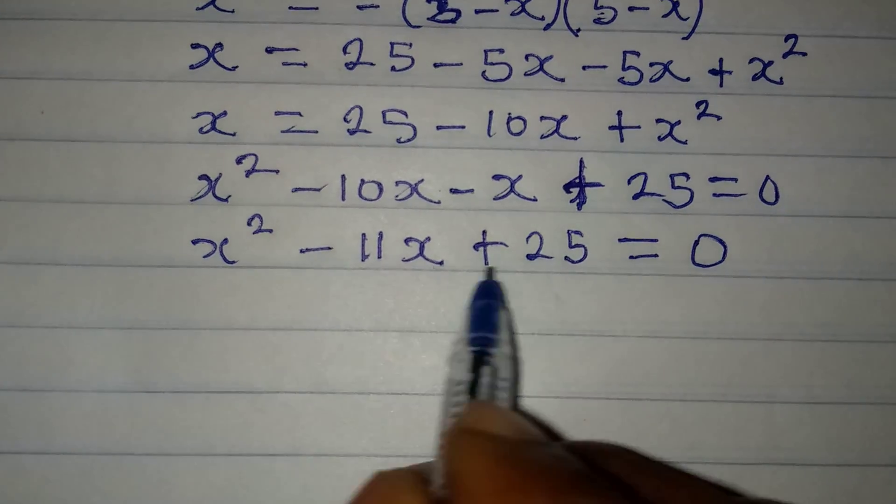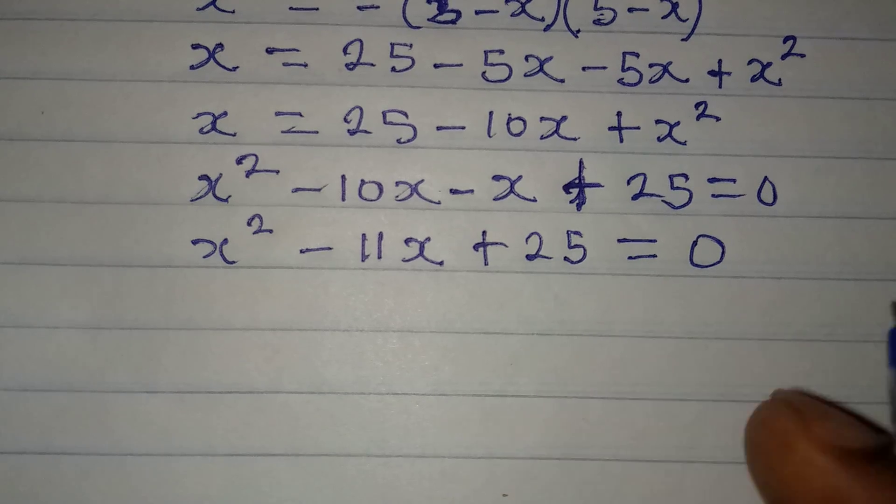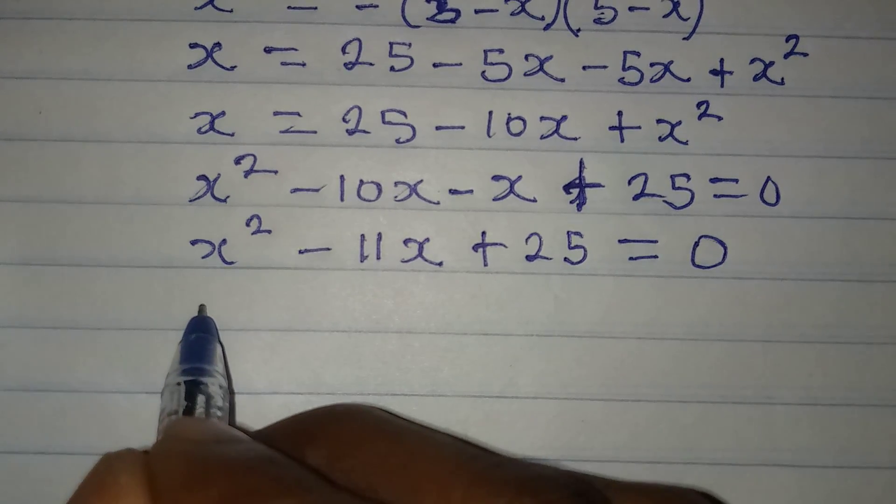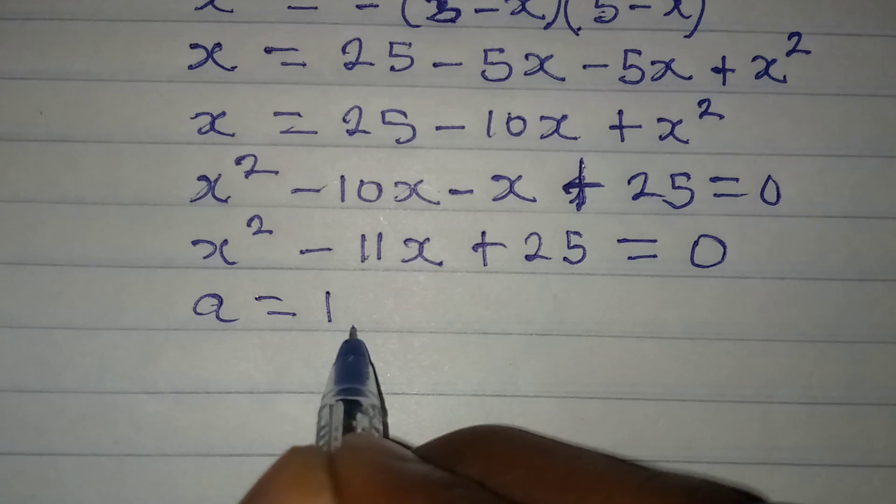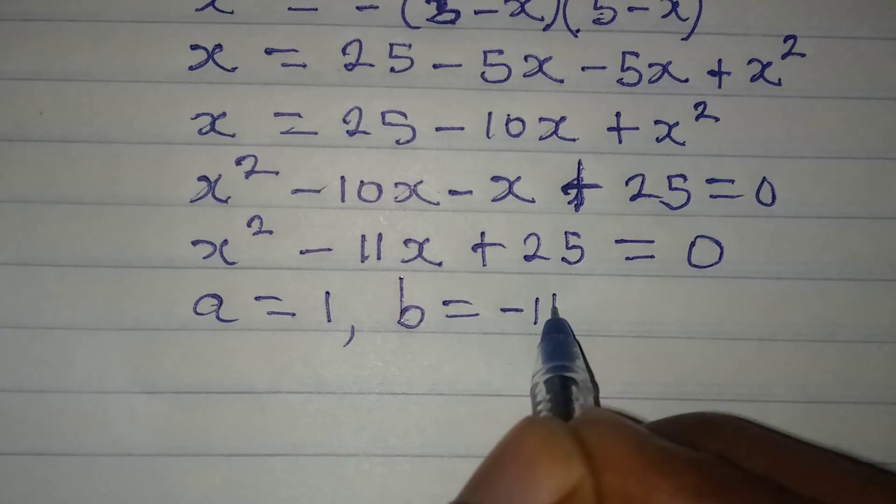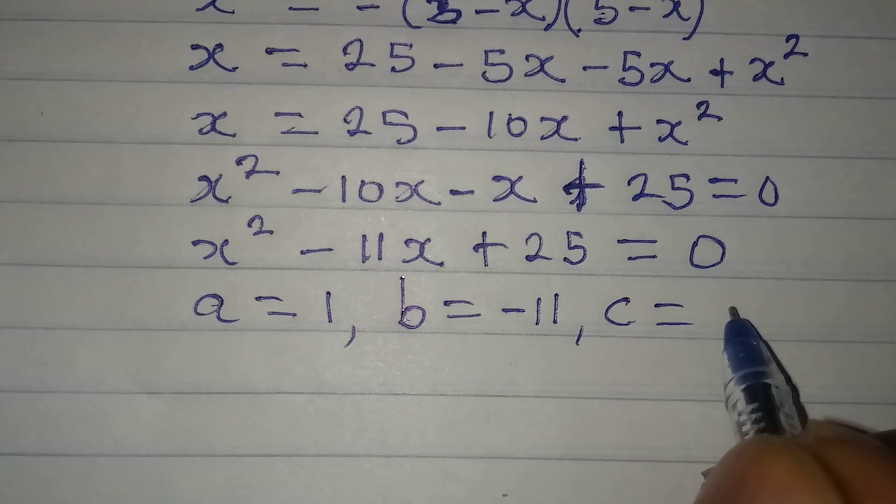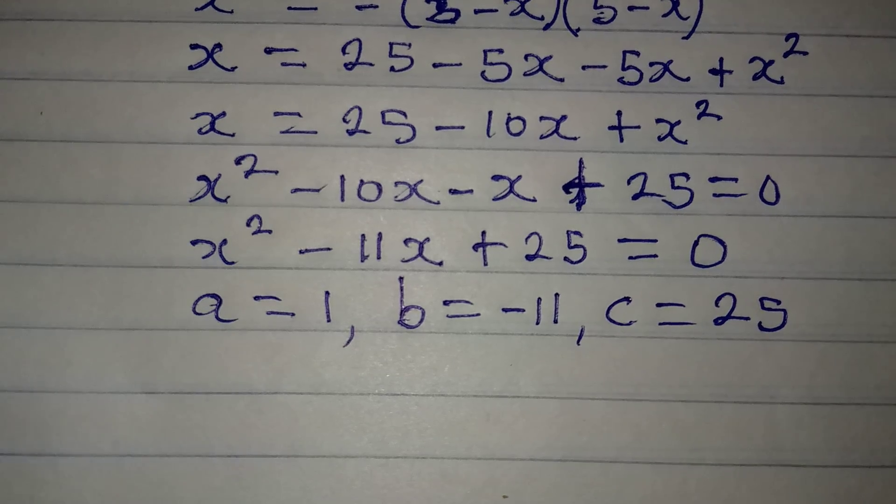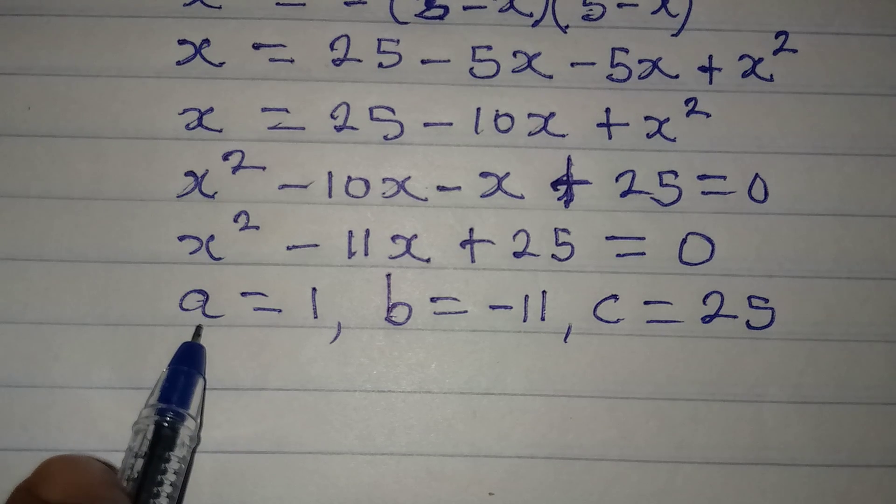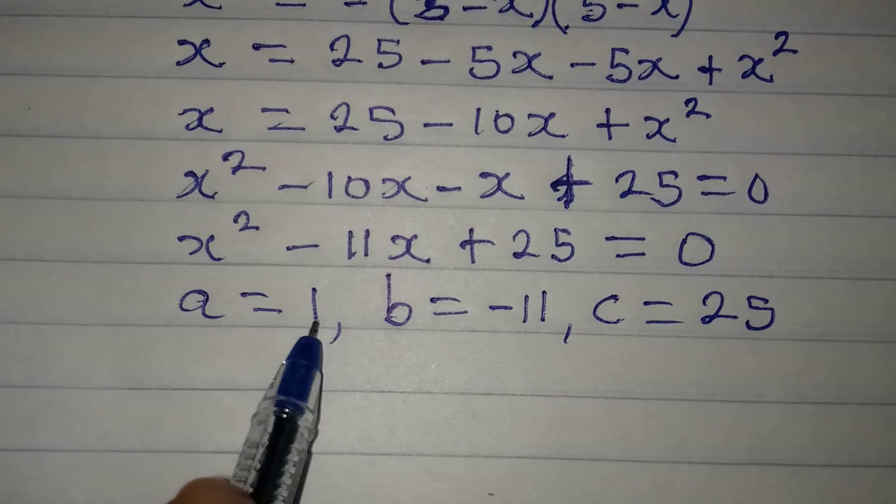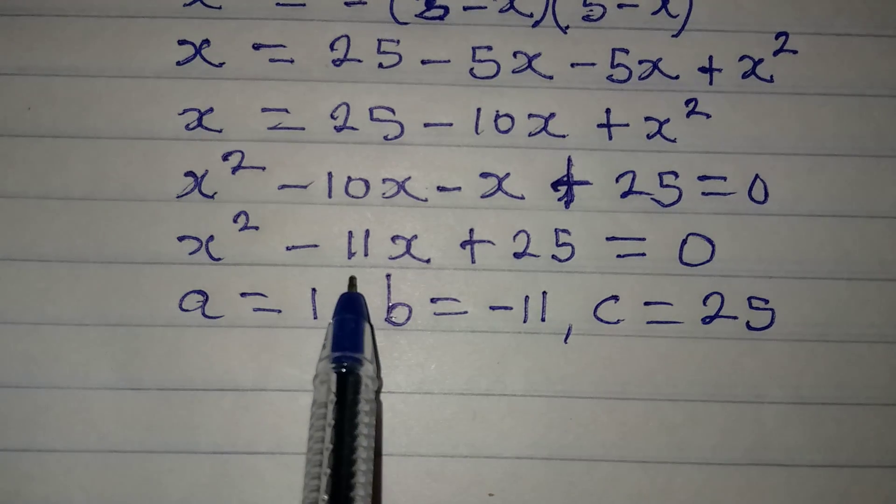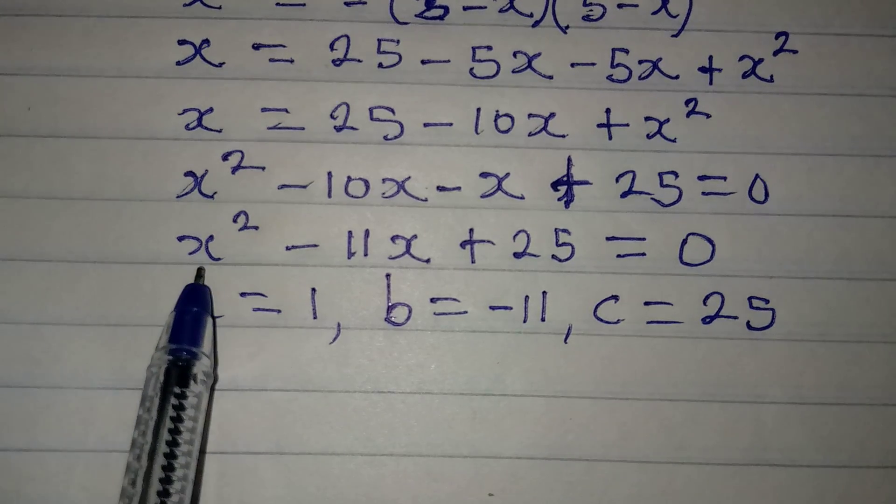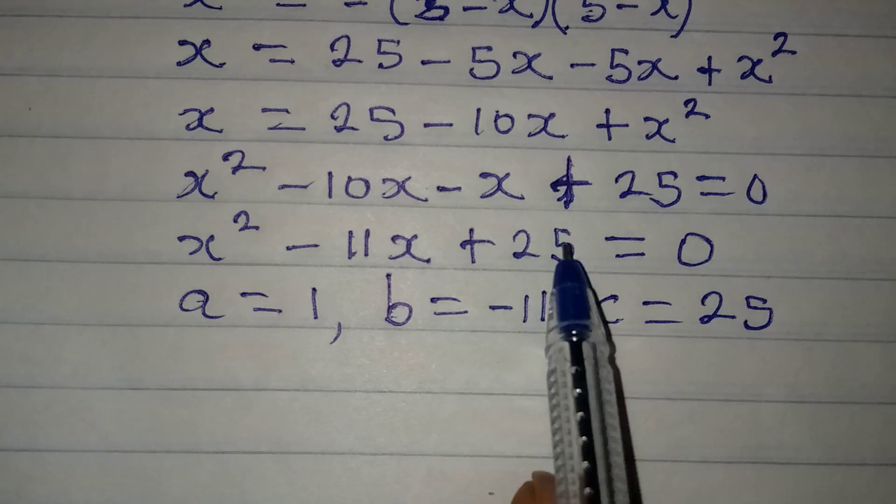Now we have a quadratic equation and you might start thinking how you factorize this. It's gonna waste your time because it may not be factorizable. So we have to apply the formula method. Our a is equal to 1, our b is equal to minus 11, and our c is equal to plus 25. a is the coefficient of x squared, b is the coefficient of x giving us minus 11, and c is the constant which is 25.